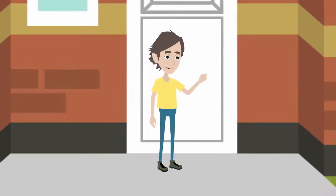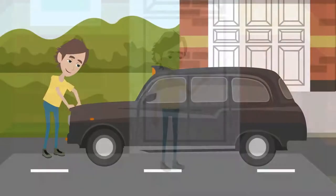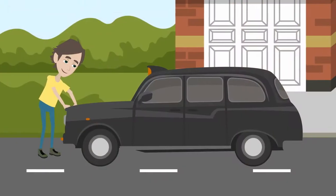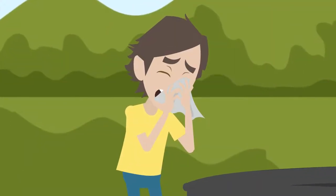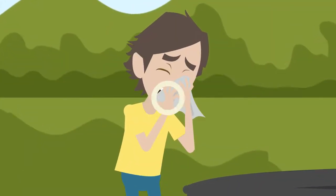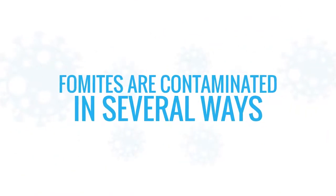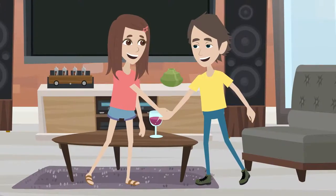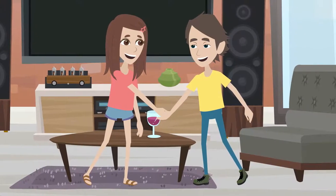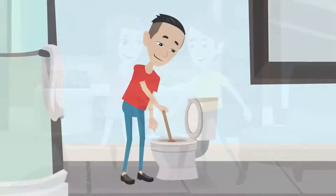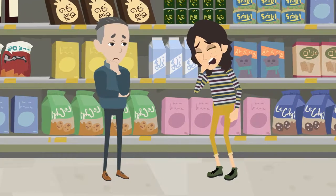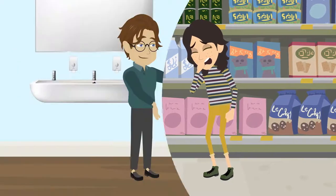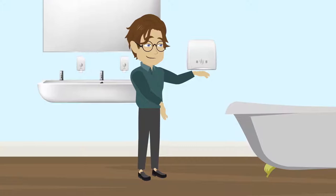Fomites, commonly touched inanimate objects, are primary vehicles for the transmission of viral and bacterial infection. Fomites are contaminated in several ways, including being touched by people who have not washed their hands, toilet plumes, droplets from people coughing and sneezing, and even air-blown hand dryers.